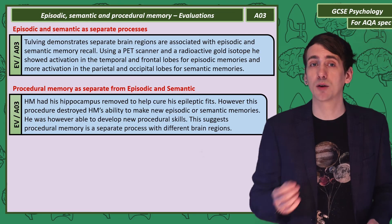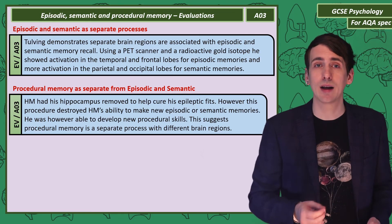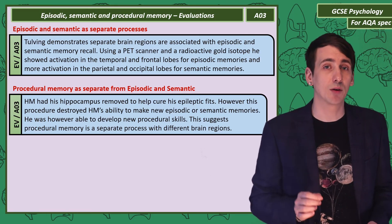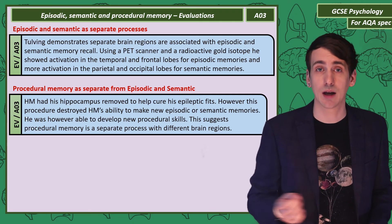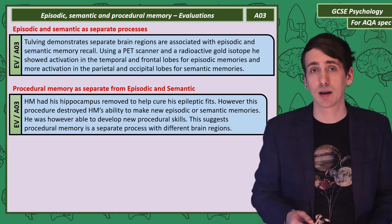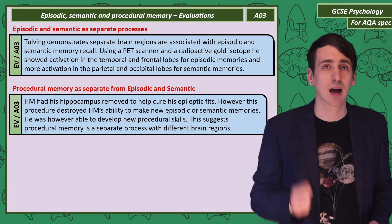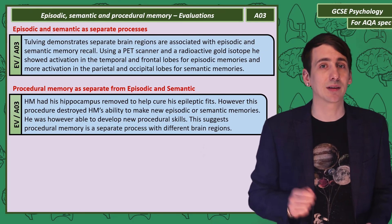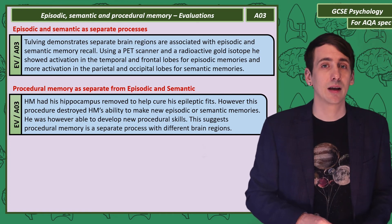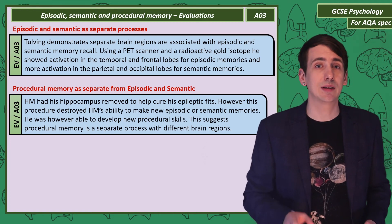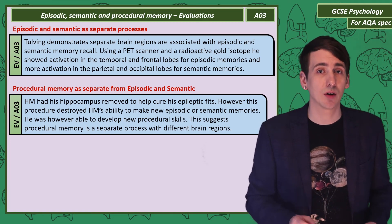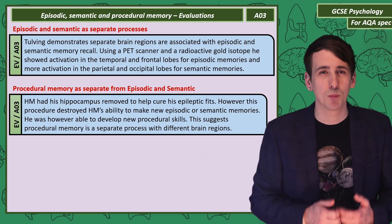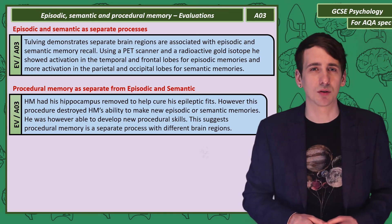If we look at procedural memory, the case study of HM shows us it's separate from episodic and semantic memory. HM had his hippocampus removed to stop epileptic seizures. He lost the ability to make new episodic and semantic memories after the surgery, but not procedural.